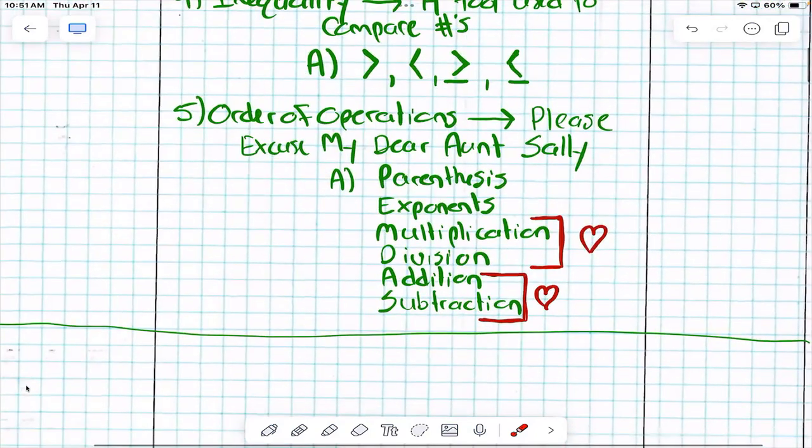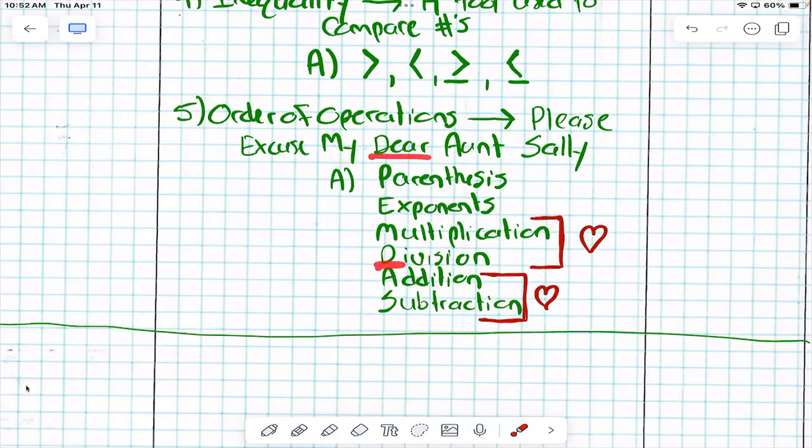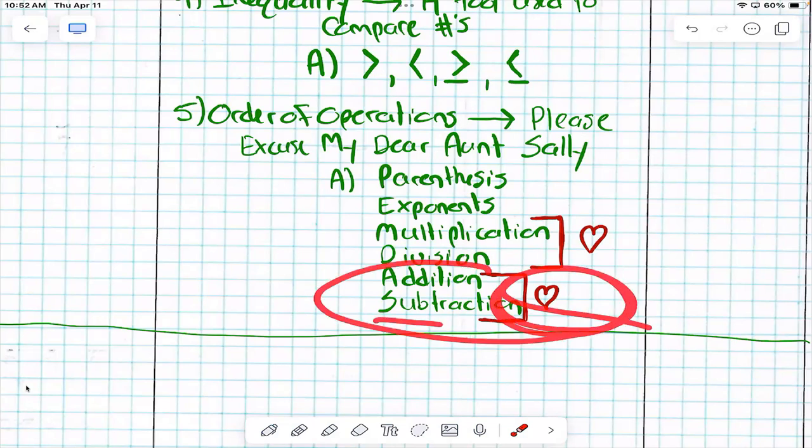Let's review order of operations. You ready? Please excuse my dear aunt Sally. It's how we remember it. What does the P in please stand for? Parentheses. What does the E in excuse stand for? Exponents. What does the M in my? Multiplication. What does the D in dear? Division. Multiplication and division are what? Equal. Which means they are equals. Which one should you do first if they both exist in a problem? The one that comes first. A in aunt stands for? Addition. S in Sally stands for? Subtraction. We know addition and subtraction are also equal. You do whichever one comes first in the problem. Good job.